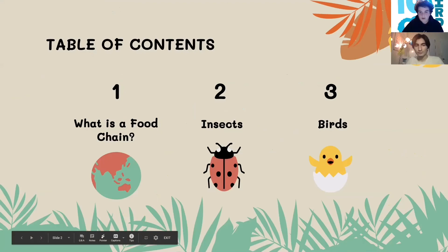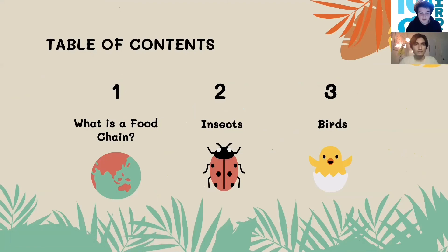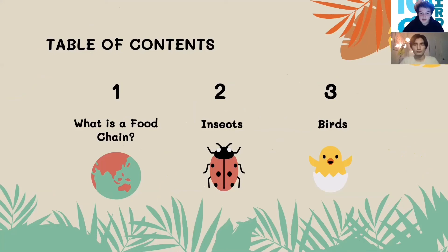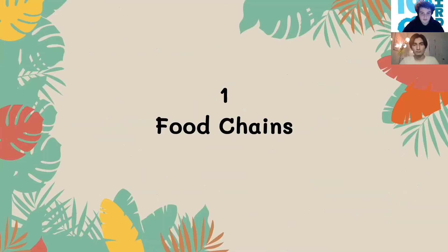In this presentation we'll be covering basically what a food chain is and then exactly how insects and birds relate to the food chain. Our first topic will be food chains.